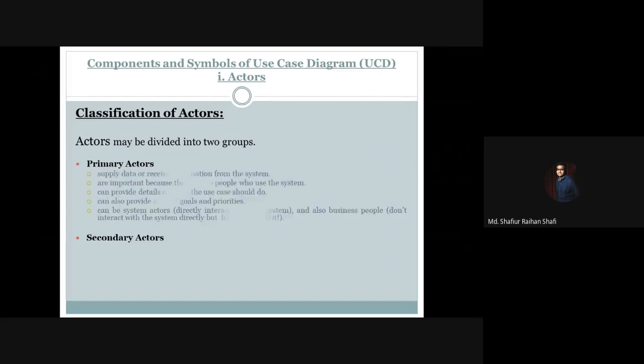So who are the primary actors? Primary actors supply data or receive information from the system. They directly supply data to the information system, and based on that input, they receive output from the system. Simply put, primary actors directly provide input and receive output from the system. Primary actors are important because they are the people who use the system.